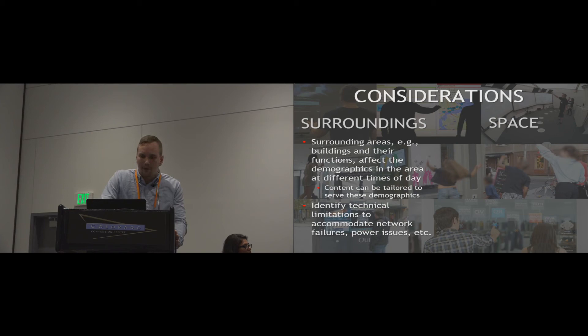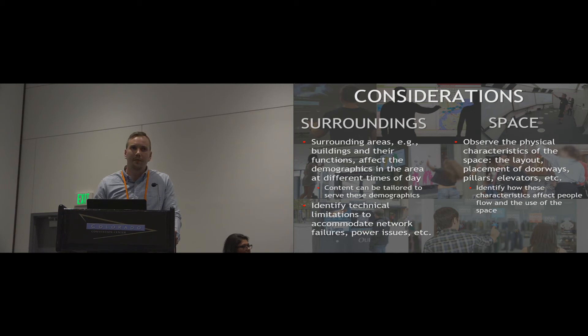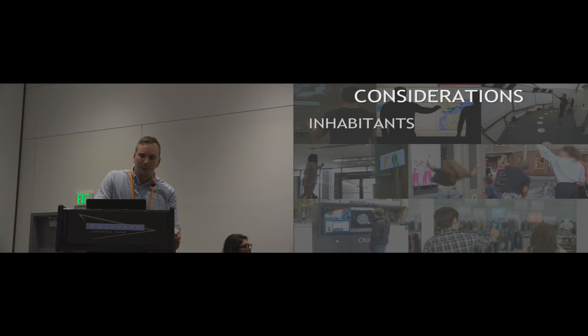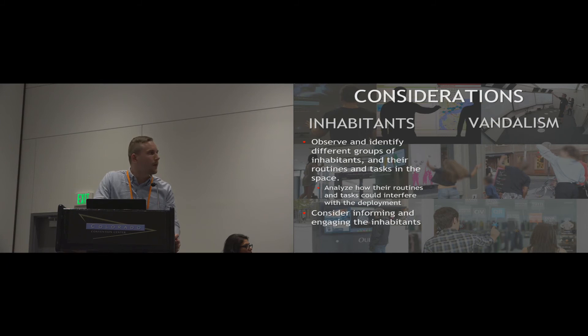For space: observe the physical characteristics of the installation space — layouts, placement of doorways, elevators, pillars, machines, and other displays — and identify how these characteristics affect people and the use of the space. Utilize pillars and other objects within the space that can potentially create comfort spaces, which may encourage people to stick around, observe the display, and eventually start interacting. For inhabitants: observe and identify different groups of inhabitants and their routines and tasks in the space, analyze how their routines could interfere with the deployment, and consider informing and engaging inhabitants, particularly if the deployment is likely to interfere with their normal routines.